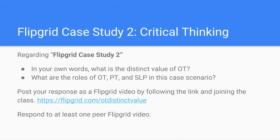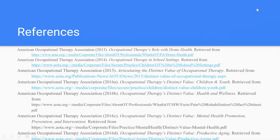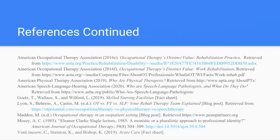Your assignment for Flipgrid is to review case study two and in your own words describe the distinct value of OT, then based on the case study, identify the designated roles for OT, PT, and SLP in this scenario. Post your response as a Flipgrid video by following the link and joining the class — you can do this from your laptop. Once posted, you are required to respond to at least one peer's Flipgrid video. References are provided if you're interested in more information, and please complete the post-test and instructor evaluation when done.